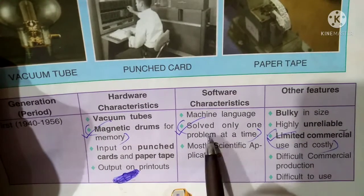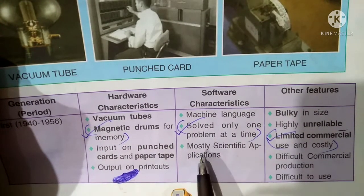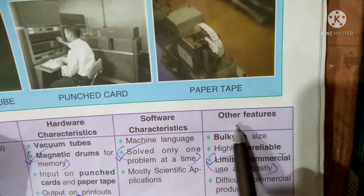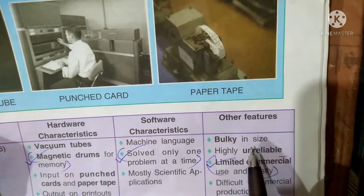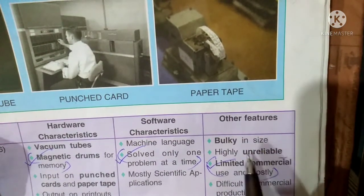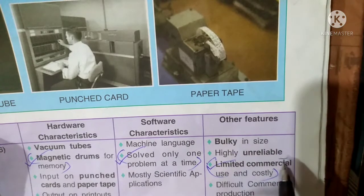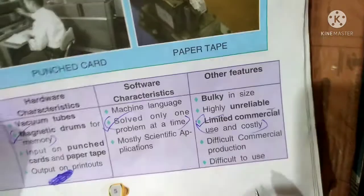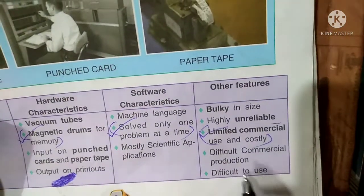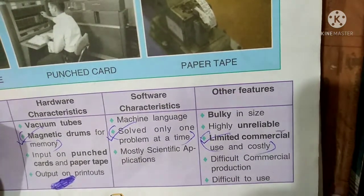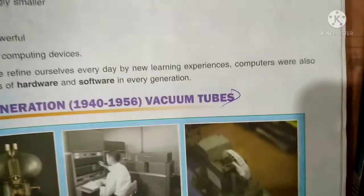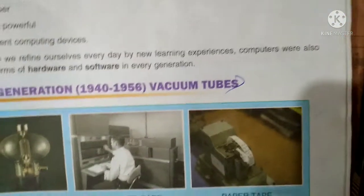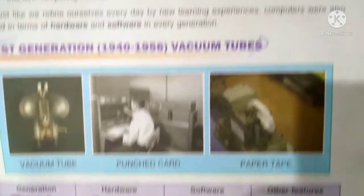Software characteristics: machine language was used; computers could solve only one problem at a time, mostly for scientific applications. Other features: very large in size, highly unreliable, limited commercial use, costly, difficult to produce and difficult to use. If you have seen an old TV at home, it was made up of vacuum tubes.